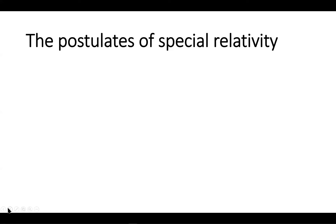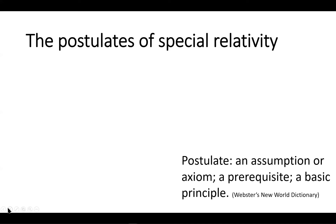We'll start with what Einstein used for the postulates of special relativity — basically what he based the theory on. A postulate is an assumption or axiom, a prerequisite, a basic principle. He had two of them, although the second is actually a consequence of the first.